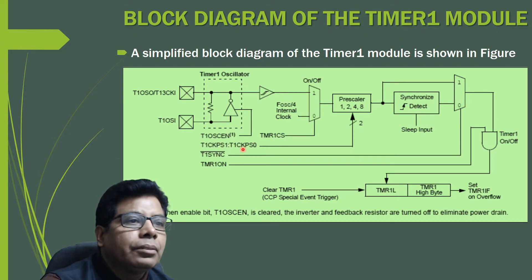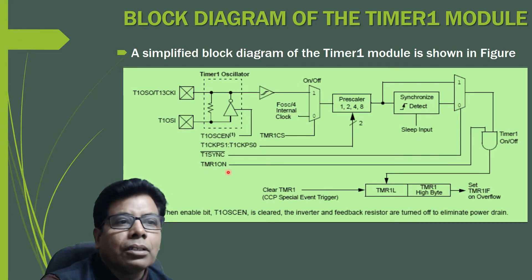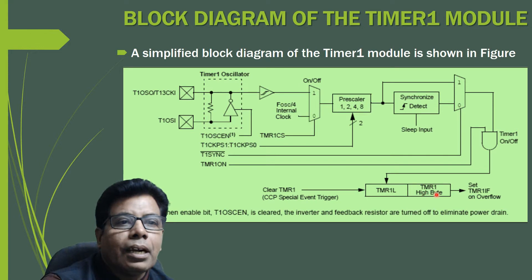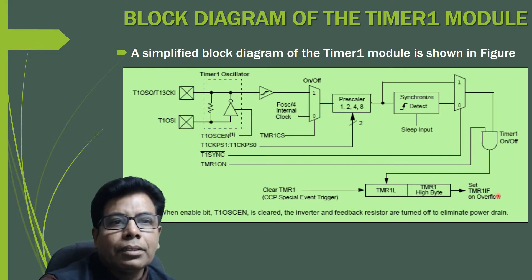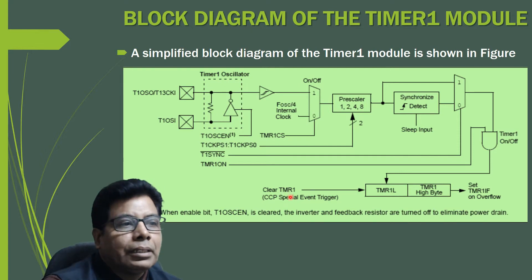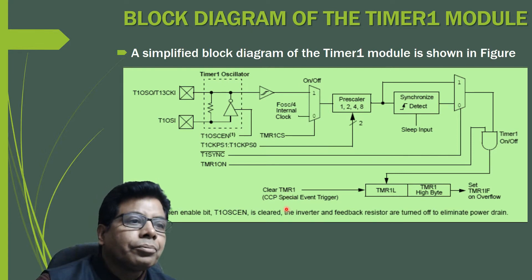The prescaler is selected based on the two bits T1CKPS0 and T1CKPS1. T1SYNC is used for synchronization. If Timer ON is enabled, the timer runs; otherwise it is off. The timer has Timer 1 Low (TMR1L) and Timer 1 High (TMR1H) registers, allowing it to work as a 16-bit timer. On overflow, the Timer 1 interrupt flag is set, and the CCP special event trigger can clear Timer 1.